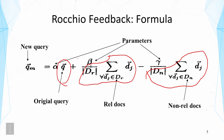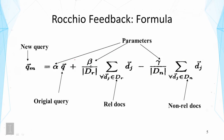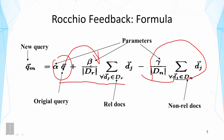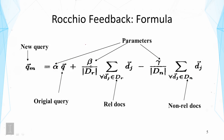We have three parameters: alpha, beta, and gamma. They control the amount of movement. When we add the relevant centroid term, we move the query vector closer to the relevant centroid. When we subtract the non-relevant centroid term, we move the query vector away from that centroid. This is the main idea of Rocchio feedback. After this, we get a new query vector that reflects movement toward the relevant centroid and away from the non-relevant centroid.